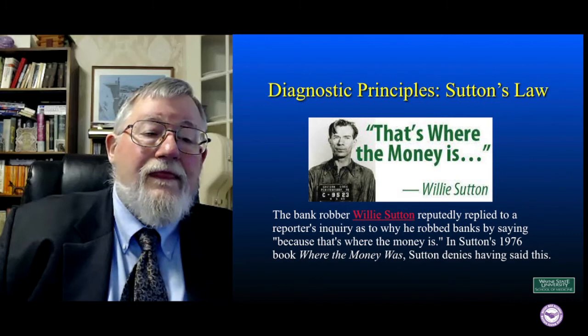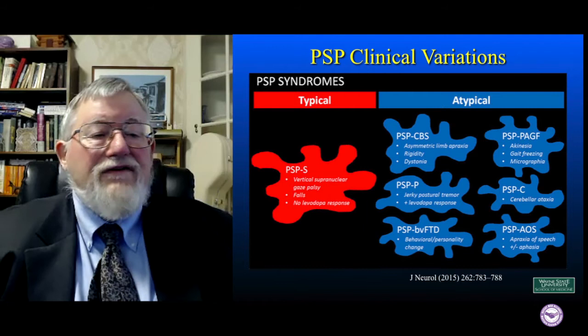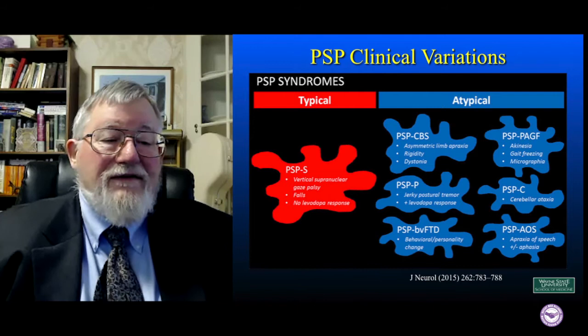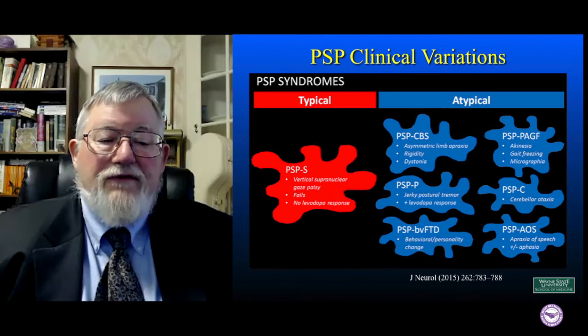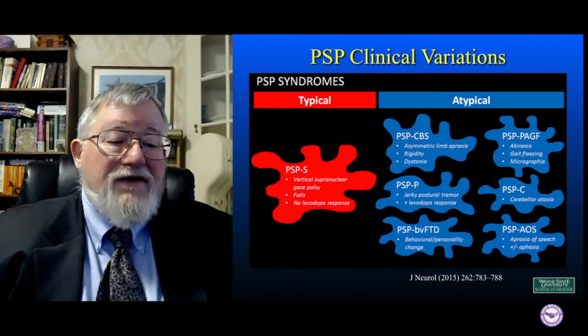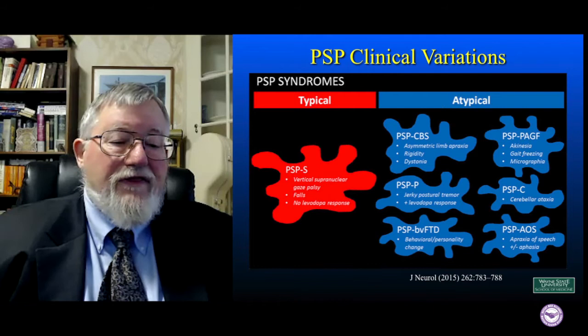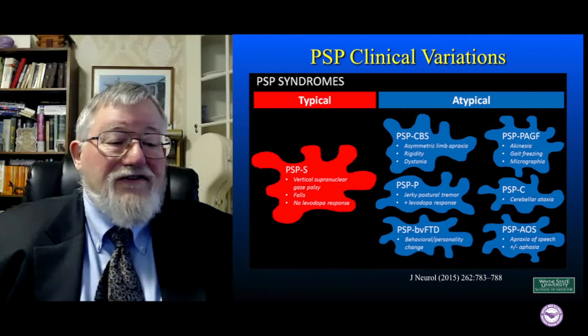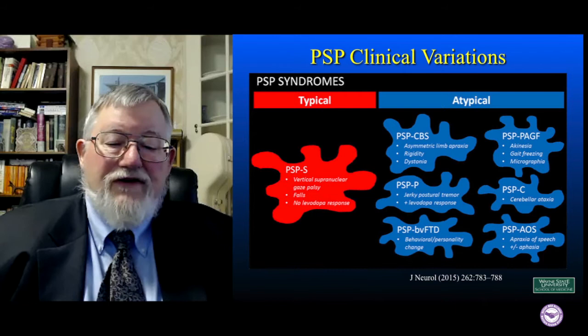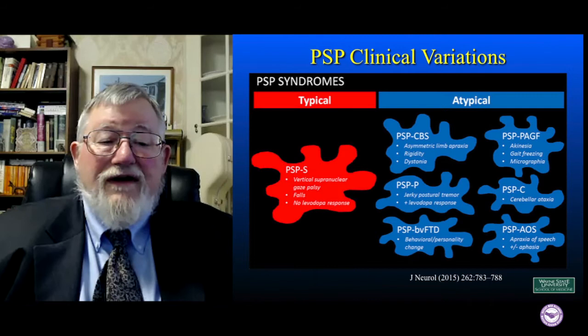I wanted to mention some of those other Parkinsonian syndromes. Here's PSP — progressive supranuclear palsy. You see the red typical puzzle piece labeled PSPS, and the first item is vertical supranuclear gaze palsy, from which the disease gets its name. The problem is patients typically present with Parkinsonian signs and symptoms and may not develop the vertical gaze palsy for several years. But they do have falls and relative lack of response to treatment with levodopa — things that also come up frequently in multiple system atrophy. And there's even a variant called PSPC that produces cerebellar ataxia, so progressive supranuclear palsy can look very much like multiple system atrophy.